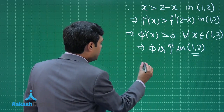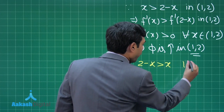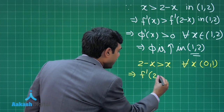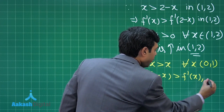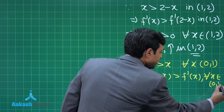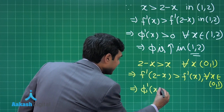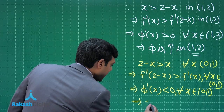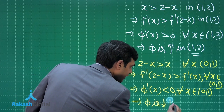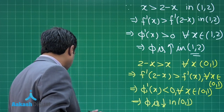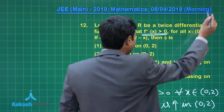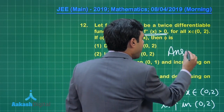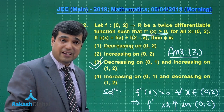For x in (0, 1), we have 2 − x > x, so f'(2 − x) > f'(x), meaning φ'(x) < 0 for all x in (0, 1). Therefore φ is decreasing on (0, 1) and increasing on (1, 2). The correct answer is option number 3.